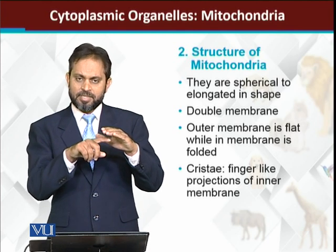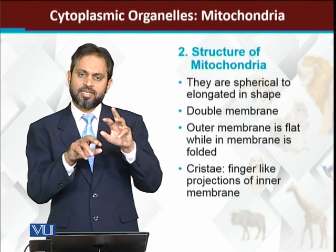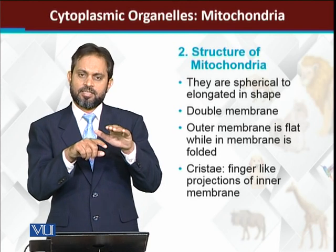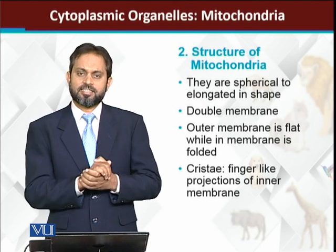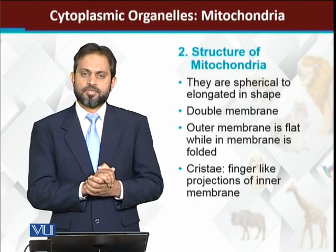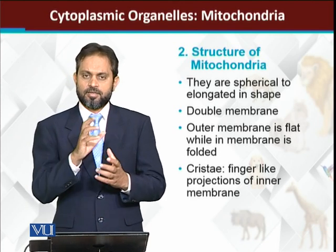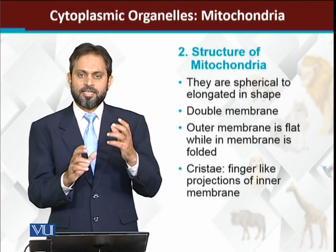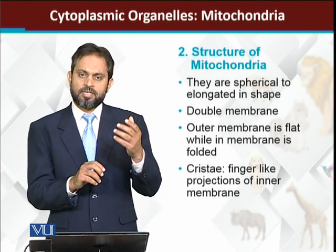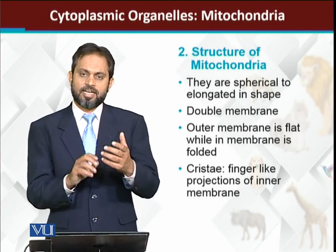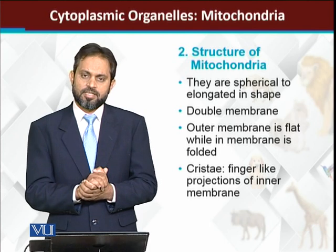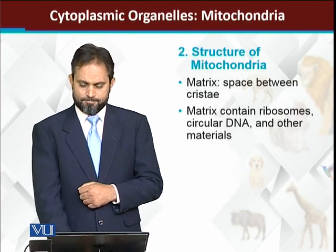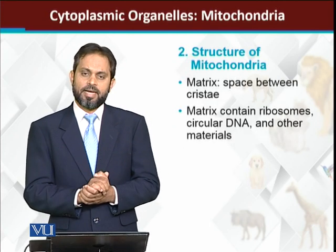These finger-like projections formed by the inner mitochondrial membrane inside the mitochondria are called cristae. So the inner mitochondrial membrane forms finger-like projections, and those are given the name cristae.